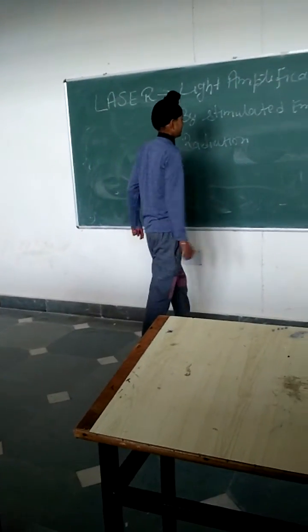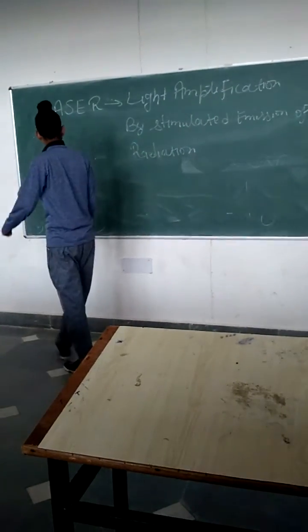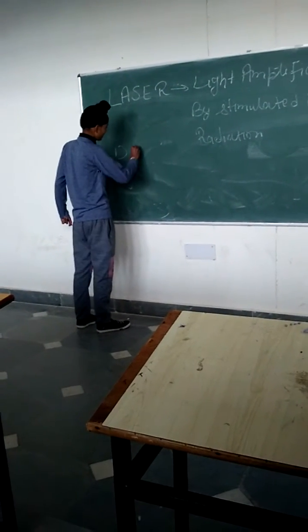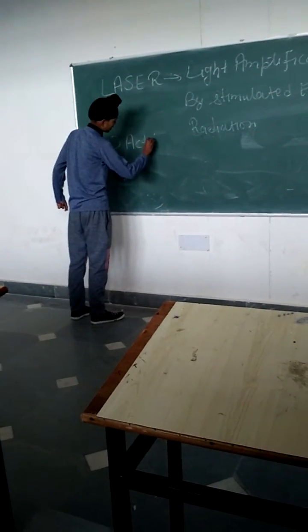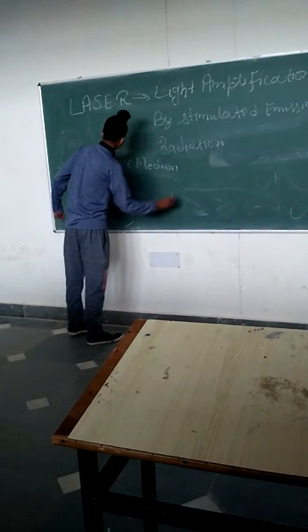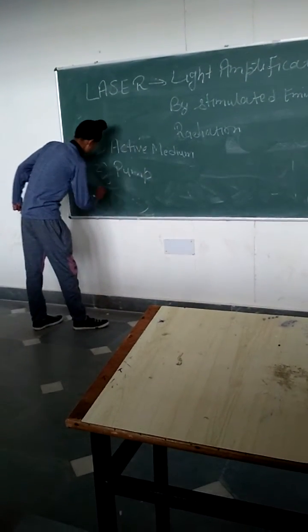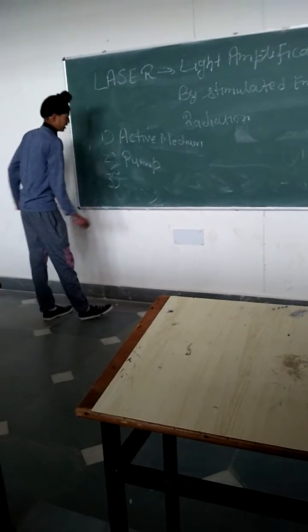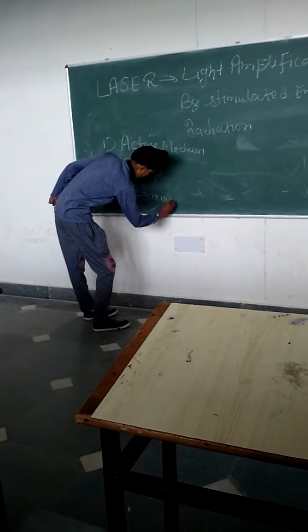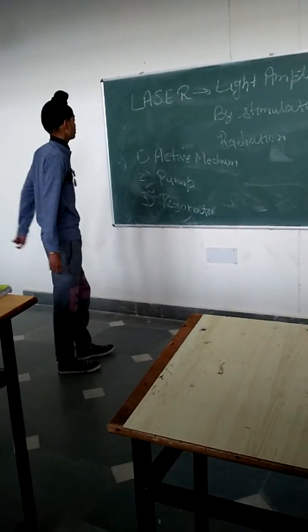After that we shall discuss about components of a laser. Basically there are three components of laser. First is active medium, second one is pump, third one is resonator. These are the components of a laser.